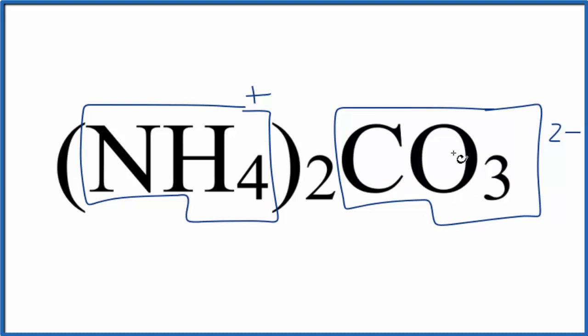So you either memorize your ions, or if you're allowed, you look them up. So we know that we have two ammonium ions for every one carbonate ion in ammonium carbonate.